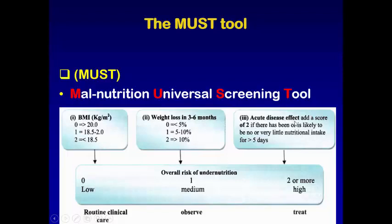The third part of MUST is the acute disease effect. When the acute disease affects the patient and there has been, or is likely to be, no or very little nutritional intake — either after the acute disease the patient enters a state of no or little nutritional intake for more than five days — we give it two.